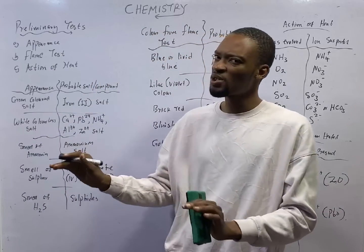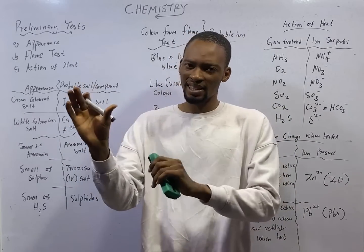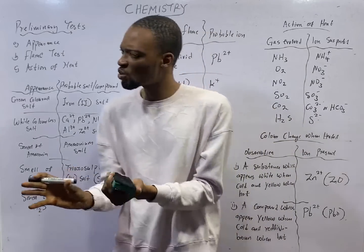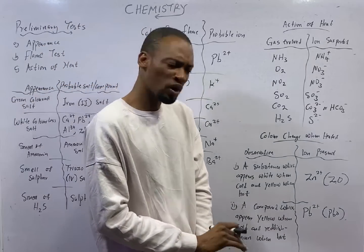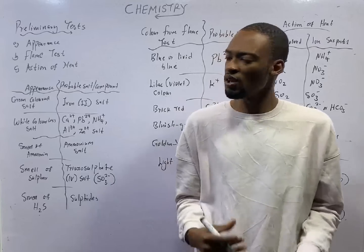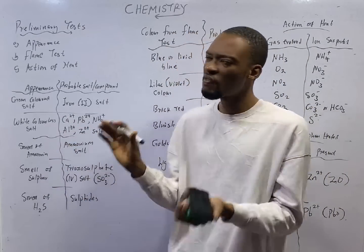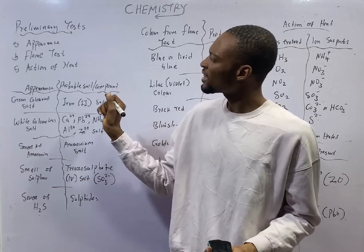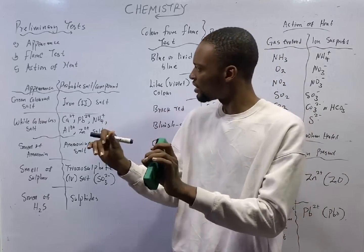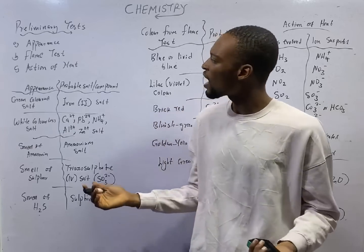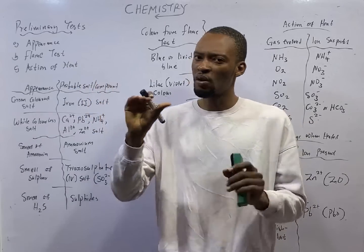In practical chemistry, we have quantitative analysis and volumetric analysis. Volumetric analysis is used to calculate the amount of substance present. For example, in titration, you see the volume of acid present, the volume of base present, the number of moles present. But qualitative analysis helps us identify the ions, elements, or compounds that are present using various tests. We have two types of tests: the preliminary test and the confirmatory test.